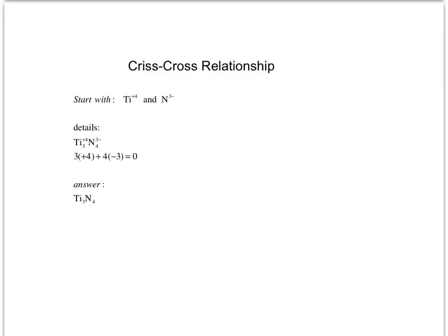Here's the criss-cross relationship again with titanium(IV) and nitrogen 3−. You need 3 titaniums (+4 each) and 4 nitrogens (−3 each) so the sum equals zero. When you write your answer, you don't put charges on top — it's just Ti₃N₄.